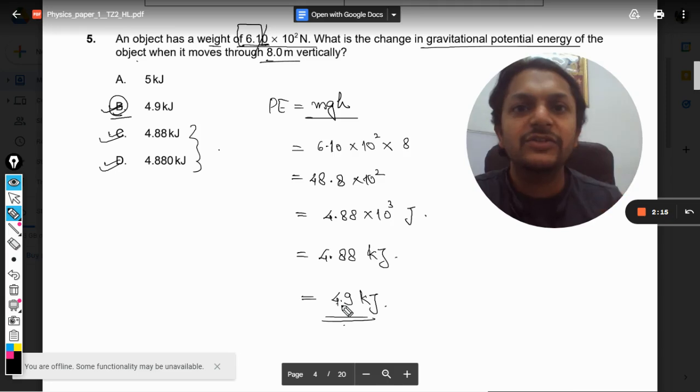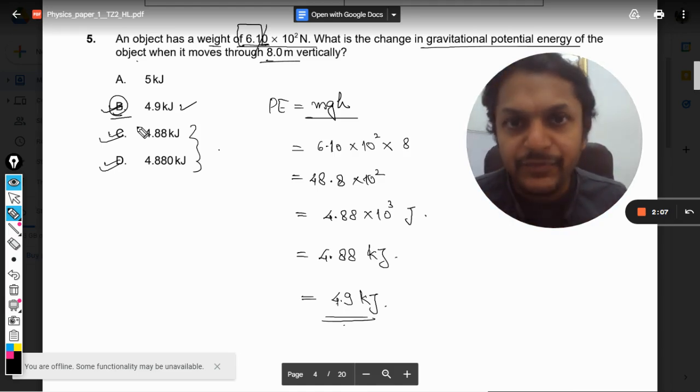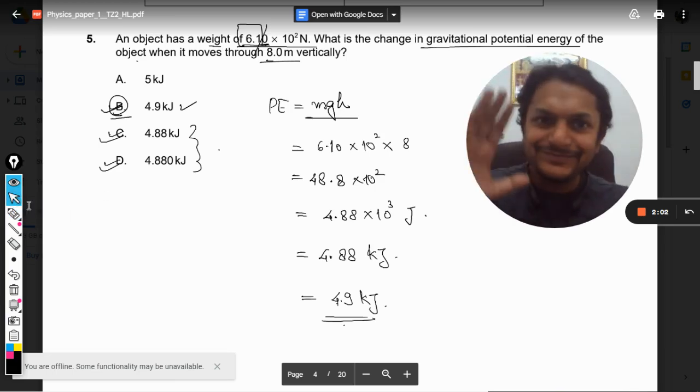If it is multiplication or division, the answer will be in two significant figures. So your answer will be 4.9 kilojoules. This is Professor Varun. Please do subscribe to my YouTube channel. All the best, bye.